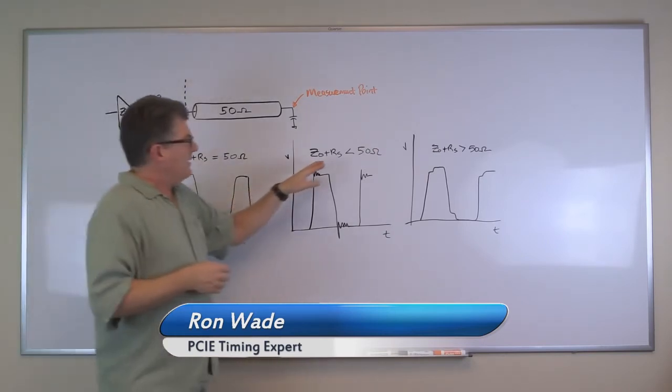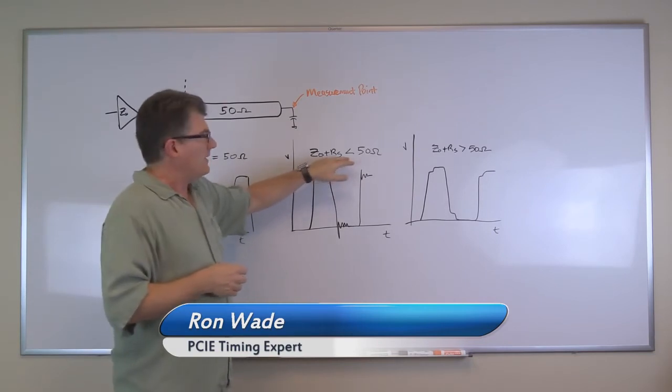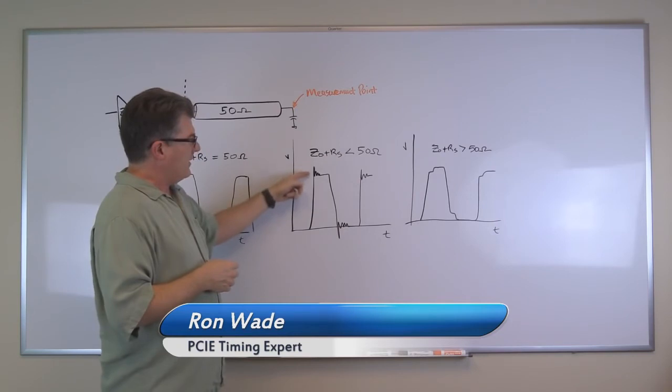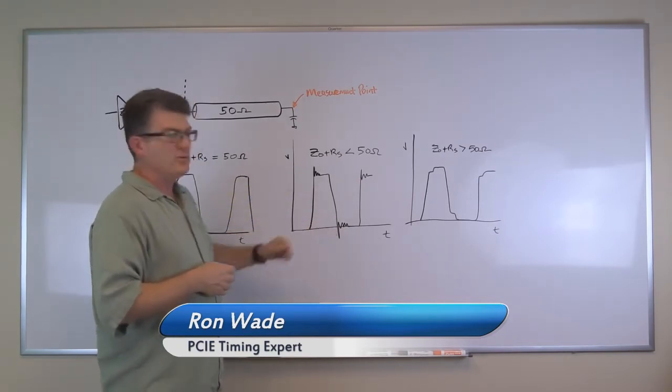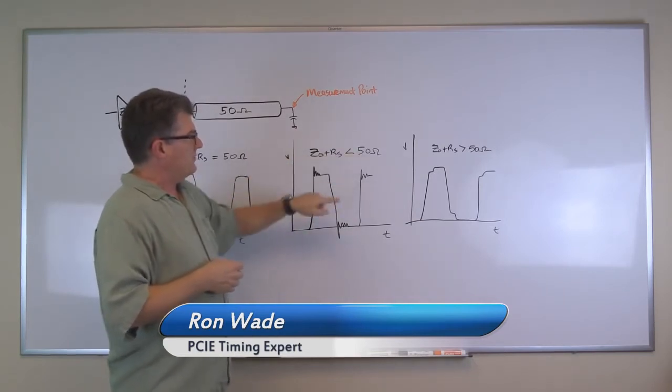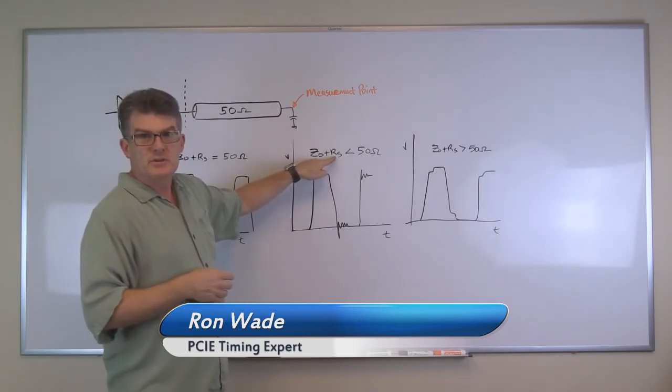Now what happens if the output impedance plus the series resistor are less than 50 ohms? When you see your clock and you have ringing on the top and undershoot on the bottom—called overshoot and undershoot—that means this is less than 50 ohms, and to correct that you would need to increase the size of the series resistor.